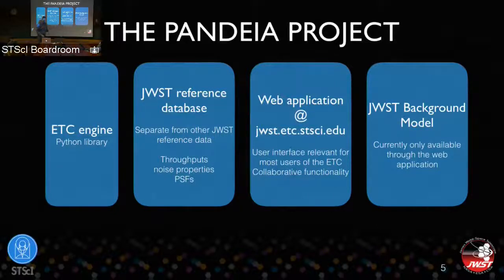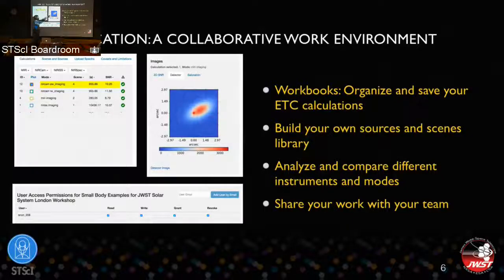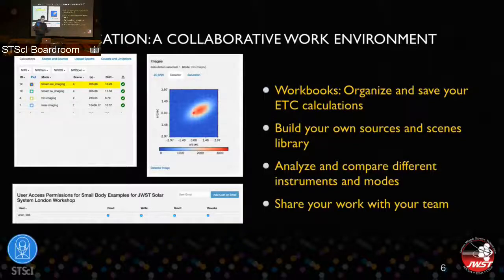Currently the JWST background model is only available through the web application. If you run a calculation, you can download the background in surface brightness units — MJy per steradian — relevant for that particular point in time. The application is a collaborative work environment. You can make a number of calculations, compare them, and look at the output. For collaboration, you have workbooks — collections of calculations — and you can pick collaborators by email if they have a MyST account and give them read or write access.